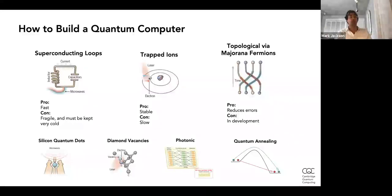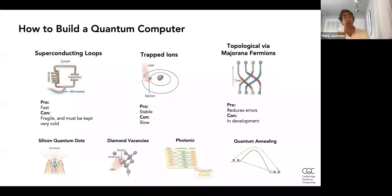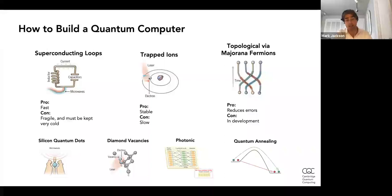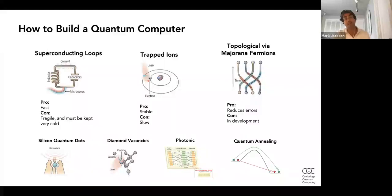There are several ways to actually build a quantum computer. The first is superconducting, used by Google, IBM, half of Intel, and Rigetti in Berkeley. Superconducting technology is based on the idea that some materials, when cooled to very low temperatures, can conduct electricity with almost zero resistance. One advantage is that it's very fast and we know it works — IBM and Google have built quantum computers on the order of 50 qubits. One disadvantage is that these qubits are fragile; to maintain quantum coherence they need to be kept very, very cold.